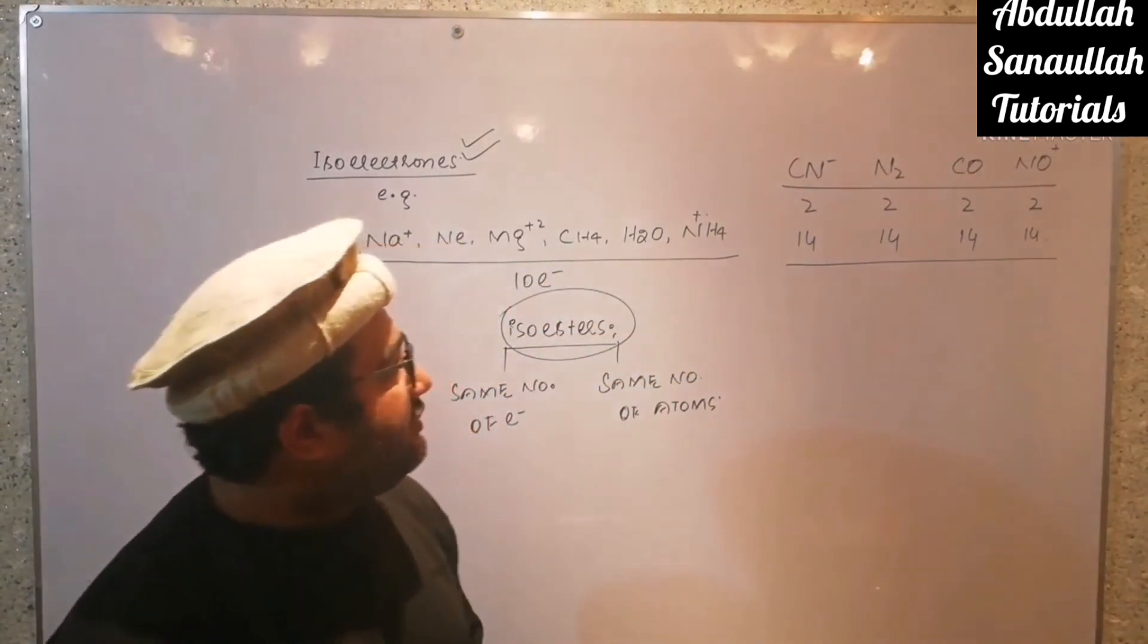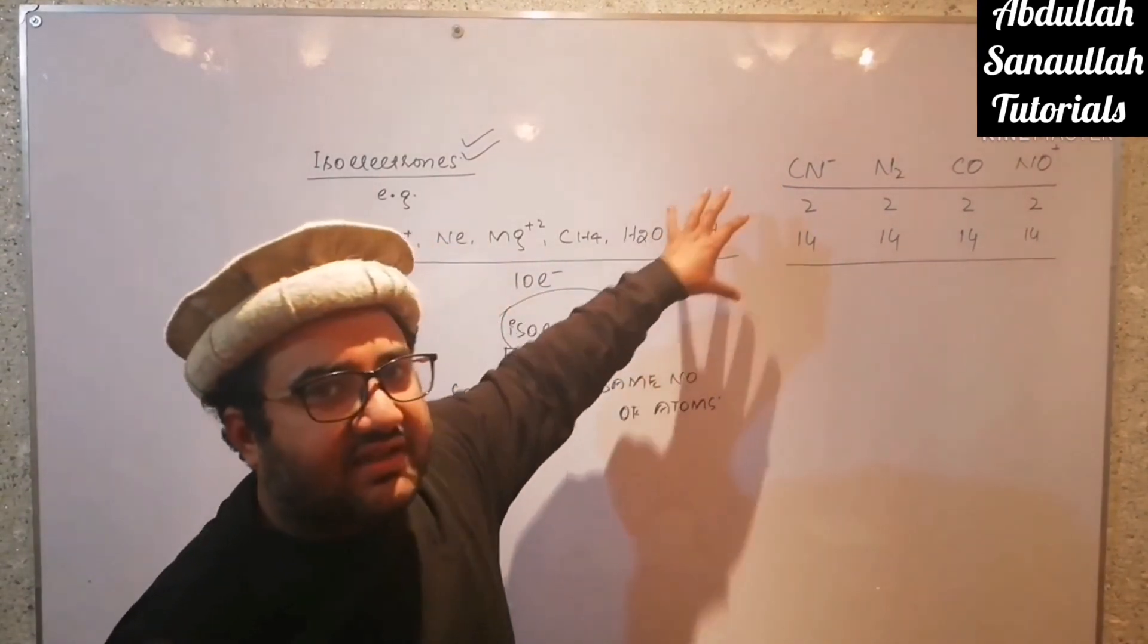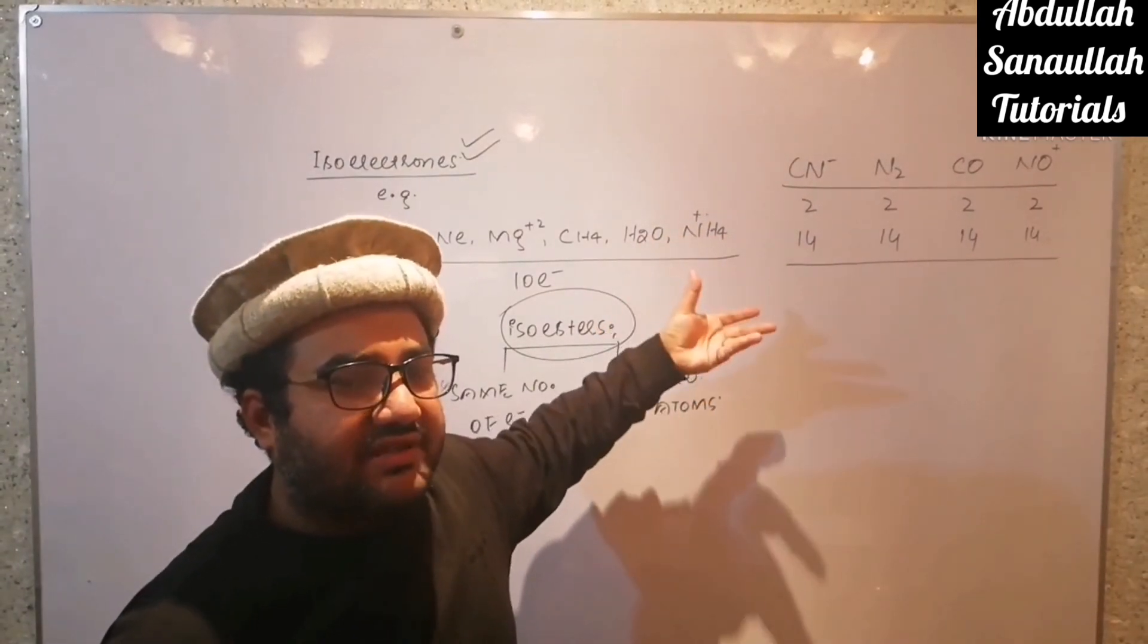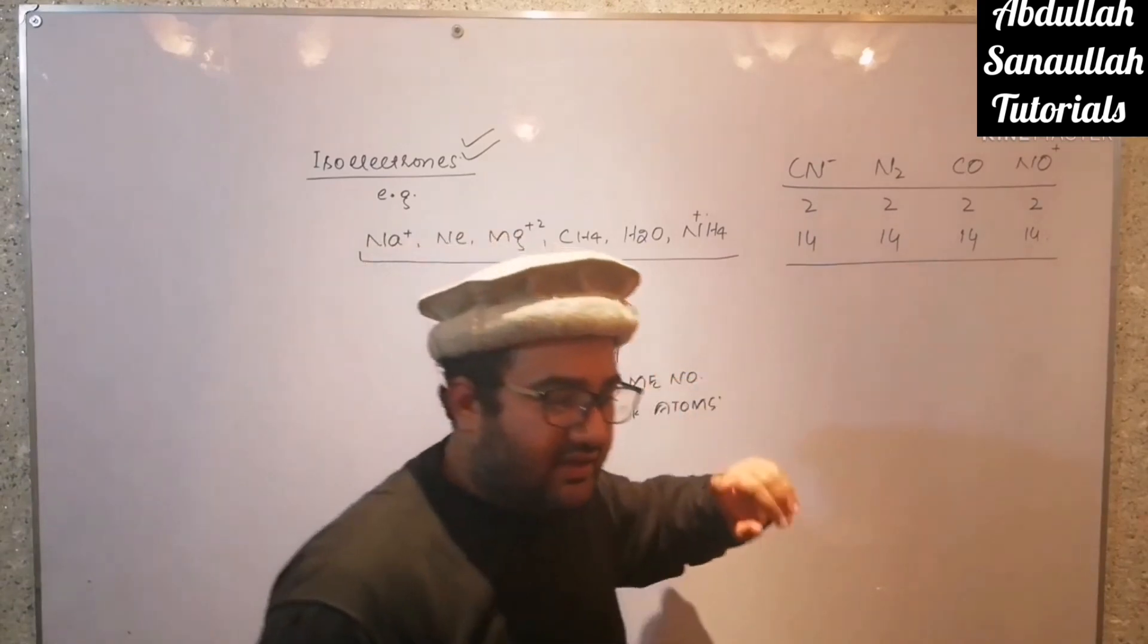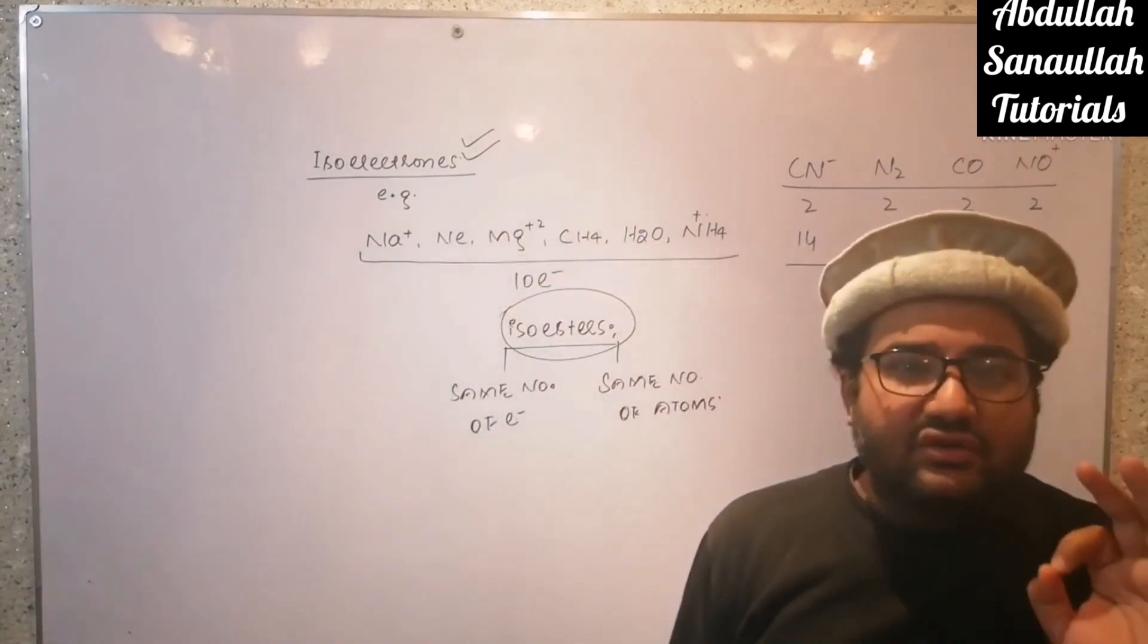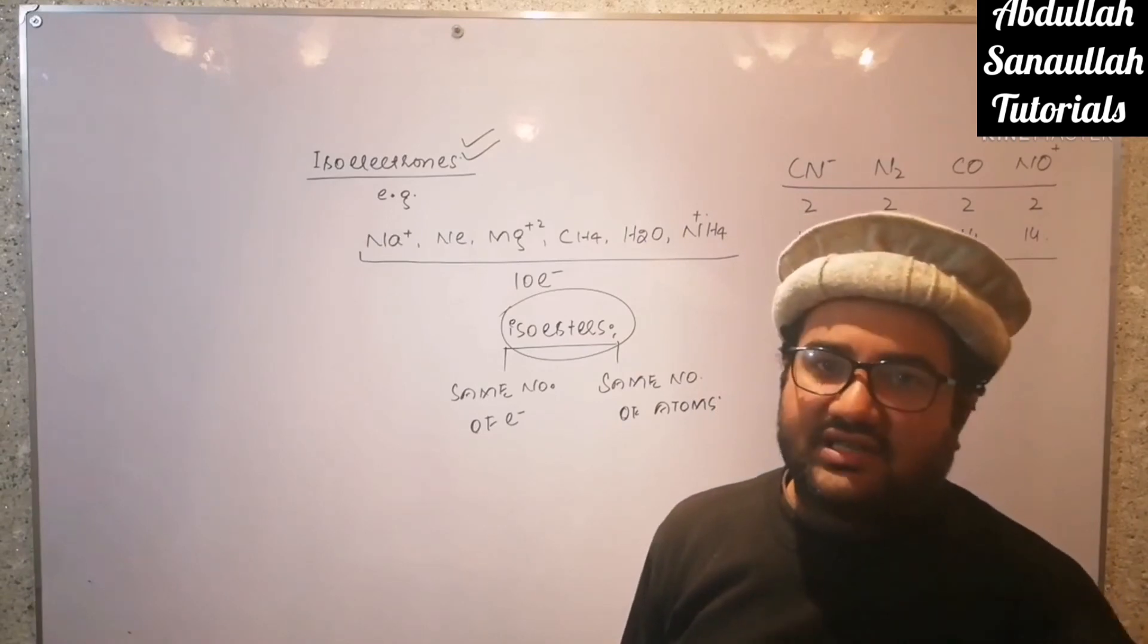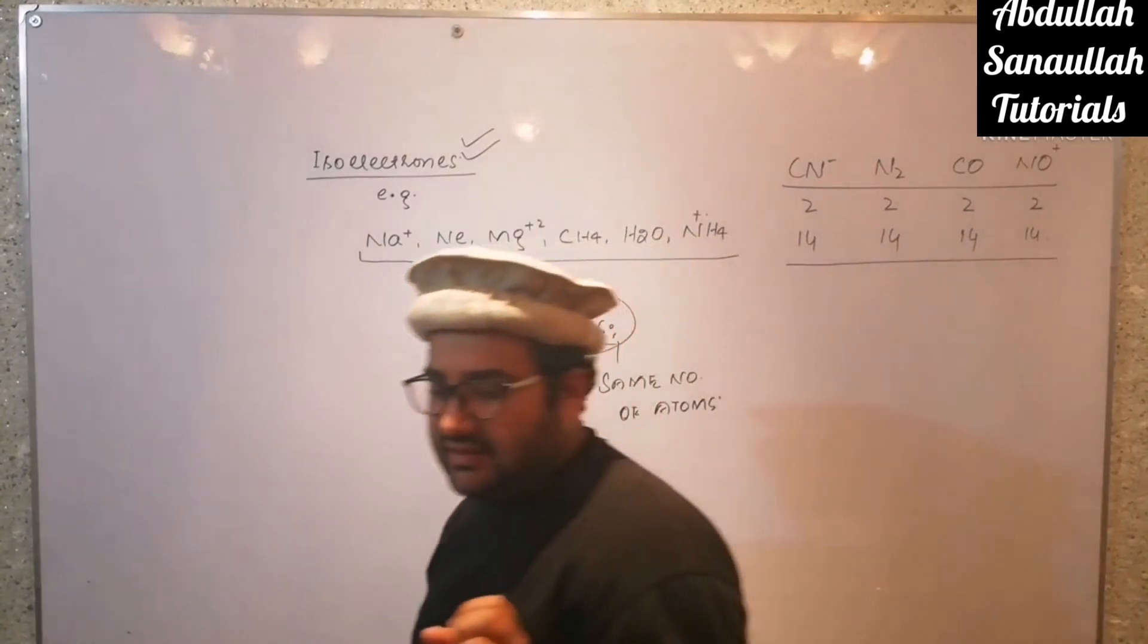So these are the four species that will be called as isoesters of each other because they have the same number of atoms and they have the same number of electrons. So every isoester is also isoelectronic, but all isoelectrons are not isoesters.